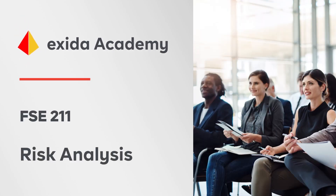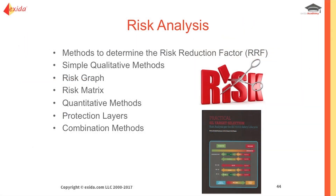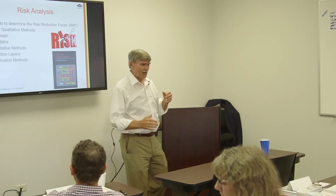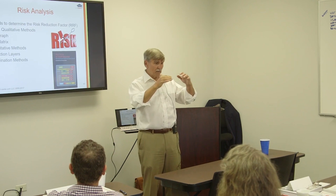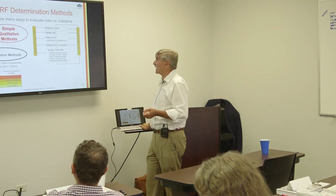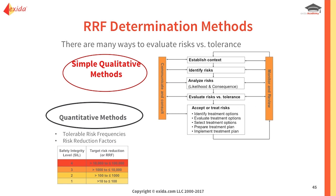Methods have been developed for risk analysis. Some are qualitative, some are terribly simple — and that's good because we need these methods — and some are more complicated combinations of quantitative methods and protection layers. The idea is to model the system in a realistic way, assign probabilities, and use the rules of probability to solve the problem. Our purpose is simple: evaluate risks versus tolerance.